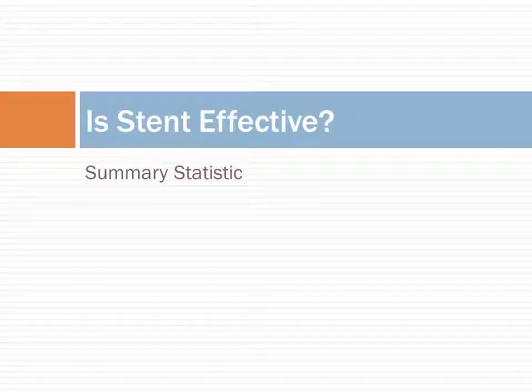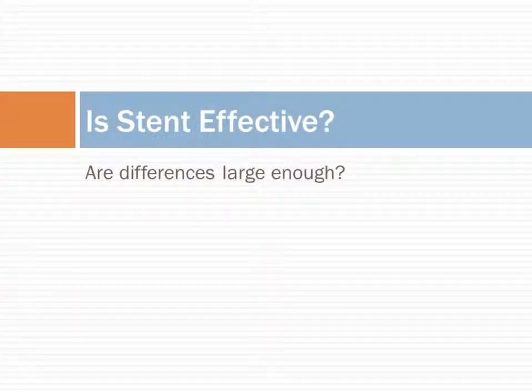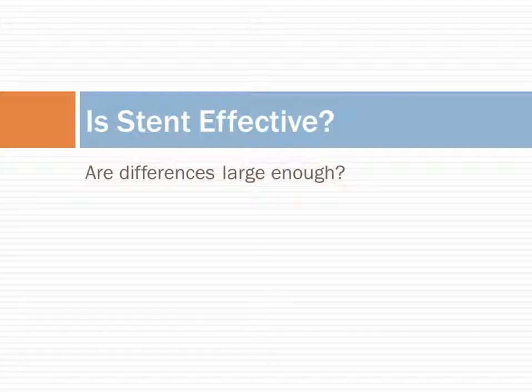In both approaches, we summarize the outcomes by calculating a statistic, such as the proportion of the group that had a stroke. In calculating a statistic, we face the problem of deciding if the outcomes in the treatment and control groups are different enough to not be due to random chance variation. Statistics helps us answer this question.